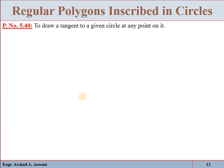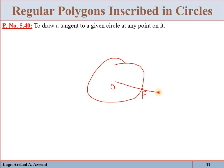To draw a tangent to a given circle at any point on it: the circle is given with center O and point P on the circumference. Join O with P and extend it to point Q such that OP equals PQ. Then draw the perpendicular bisector of OQ. This perpendicular bisector will pass exactly through point P and will be the required tangent to the given circle at point P.